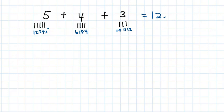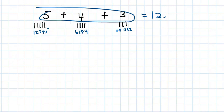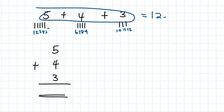The concept is the same whether the numbers are presented horizontally, like they are here, or vertically — for example, five, four, three stacked on top of each other.